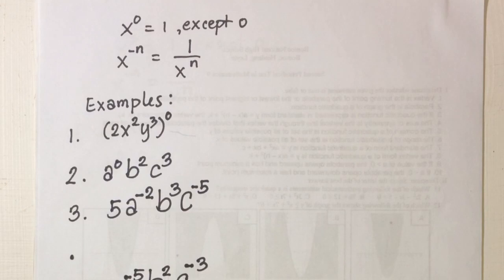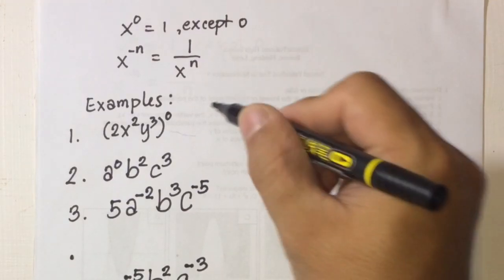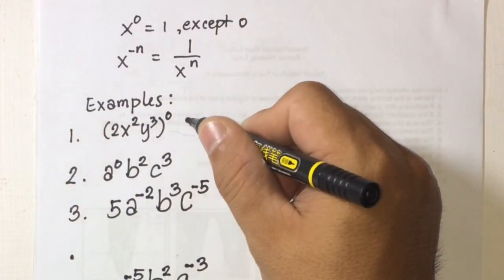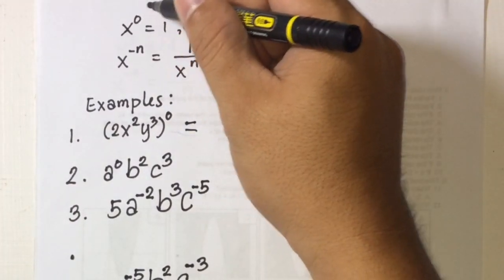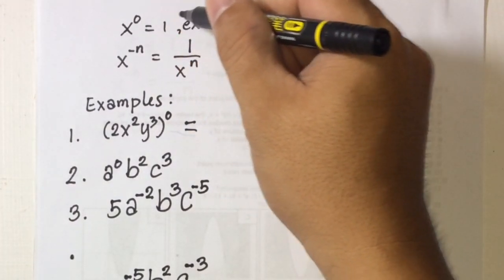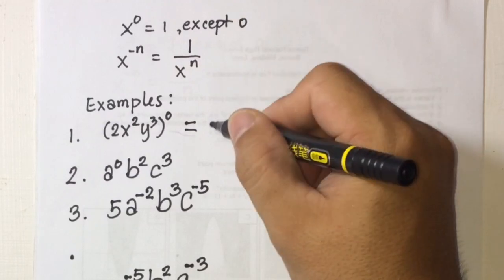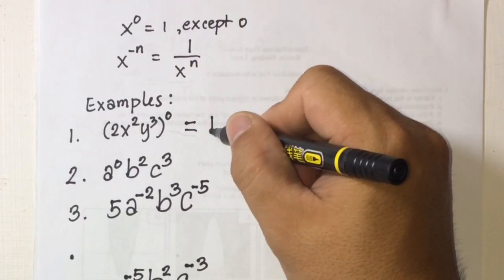Let's have some examples. Number 1: the quantity of 2x squared y cubed raised to the power of 0. If we're going to simplify this, any number raised to the power of 0 is equal to 1, so this will be 1.